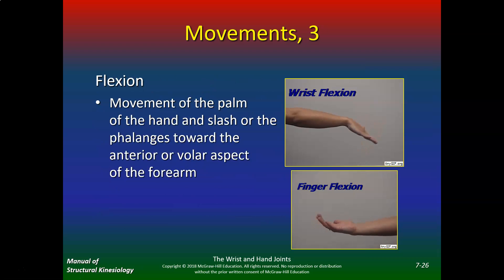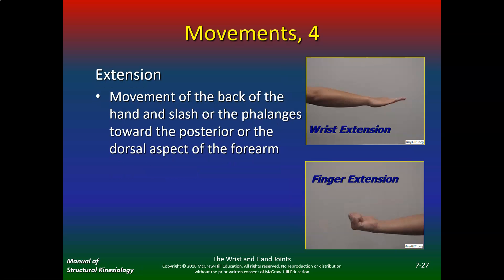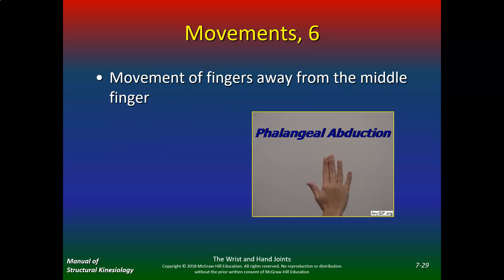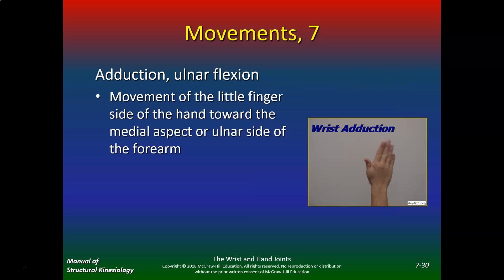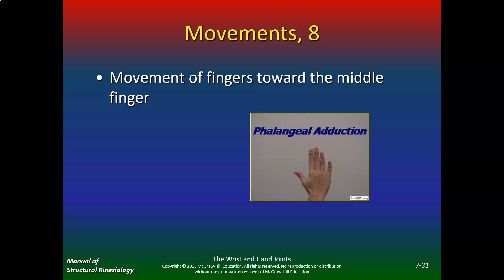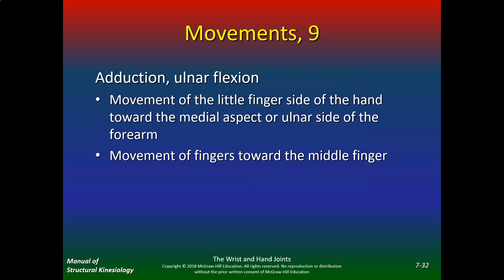Make sure you know the difference between abduction and adduction. The diagram shows wrist flexion, finger flexion, wrist extension, finger extension, wrist abduction (radial deviation), and phalangeal abduction. Moving away from the fingers is adduction or ulnar deviation (ulnar flexion) — movement toward the middle finger is adduction.